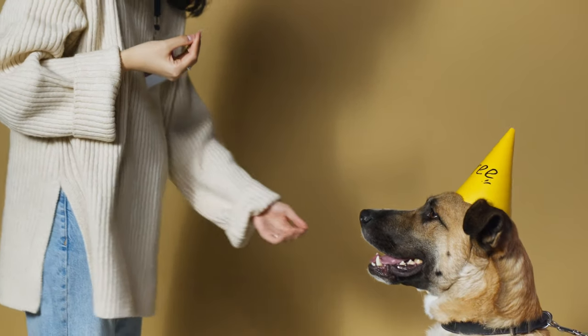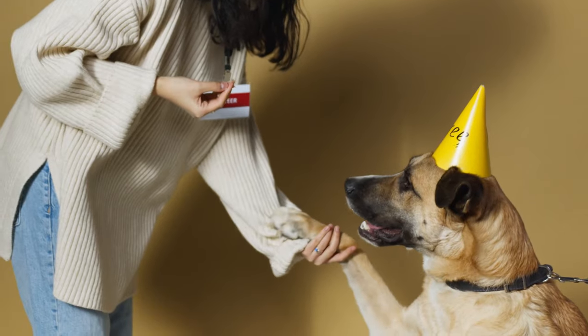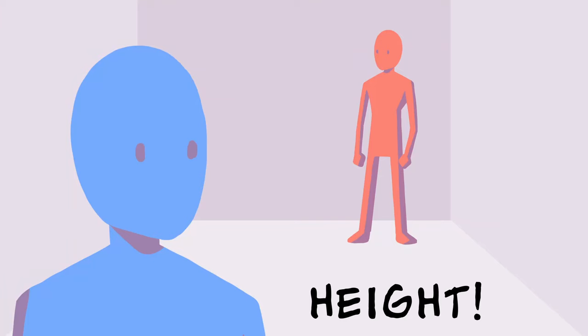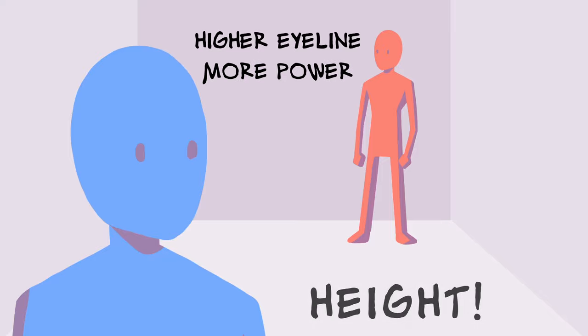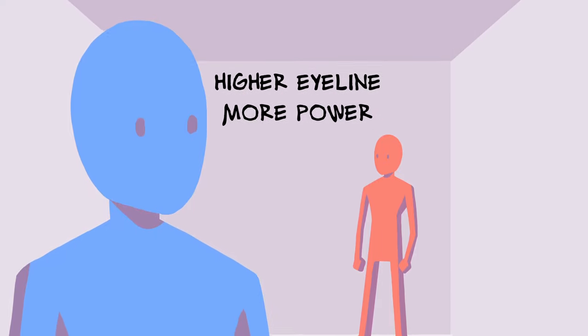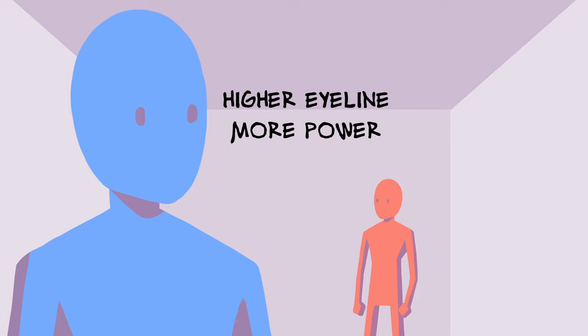The height difference between characters can also be pretty important. If the second person's eyeline far away is higher than the first character's, it looks like they have more power. While if the character's eyeline in front is higher than the character behind, it can look like they have more power. In theater they'll also use stage sets to suggest the power height dynamic, but we're not going into the background stuff right now — because if we did, this video would be way, way longer.